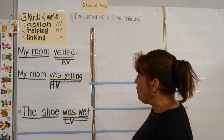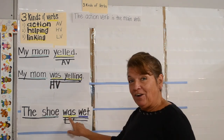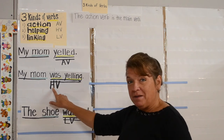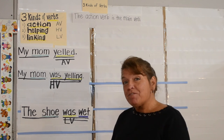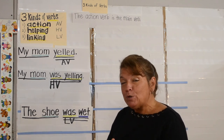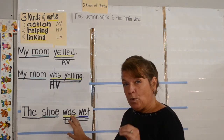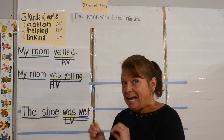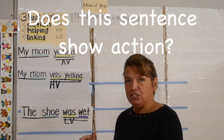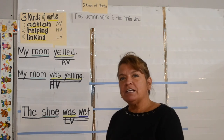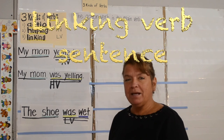Take a look here. We have was here, and we have a was here. One is labeled a helping verb, and one is labeled a linking verb. There are certain verbs that can be used either as a helping verb or a linking verb. What you're looking for is that question: does this sentence show action? If the answer is no, then you know you are looking at a linking verb sentence.